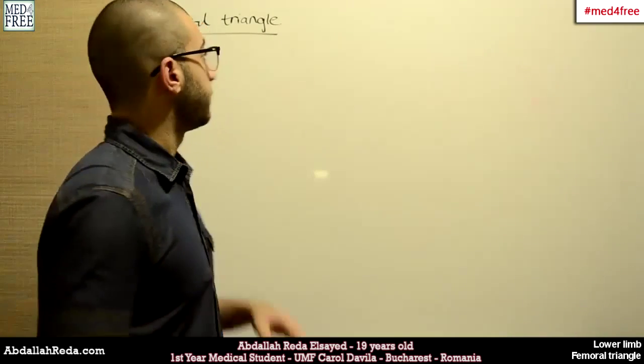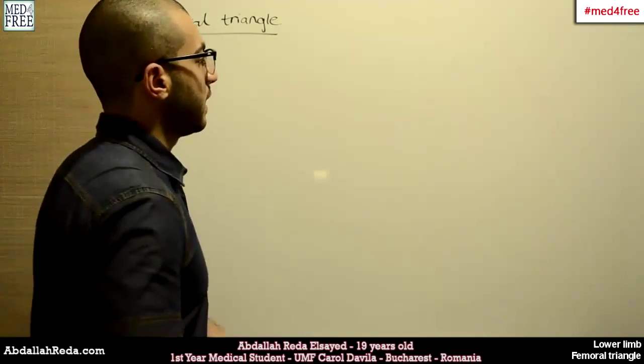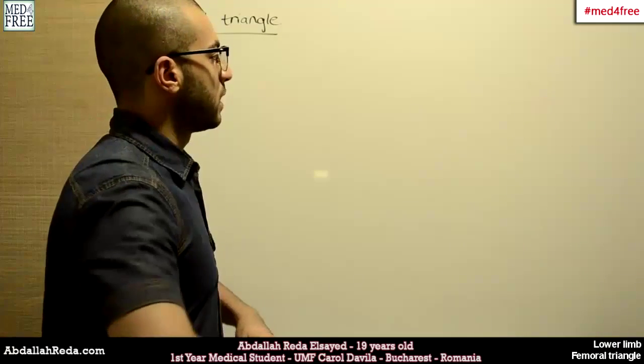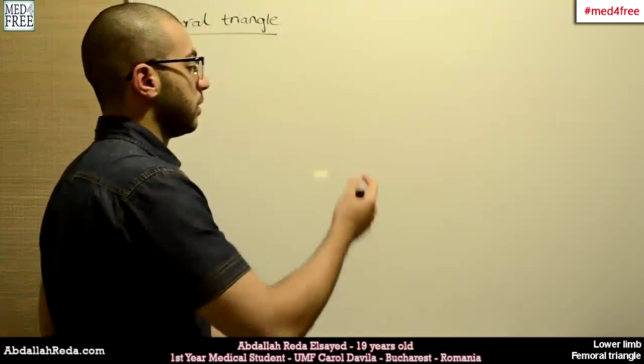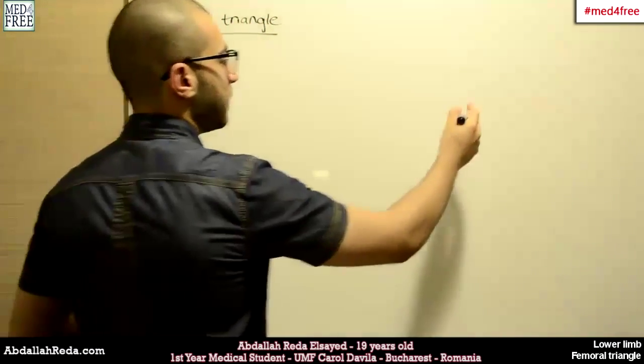Today we're going to talk about the Femoral Triangle. The Femoral Triangle is an anatomical region that is found in the lower limb. This is the Femoral Triangle.